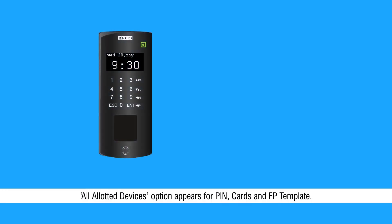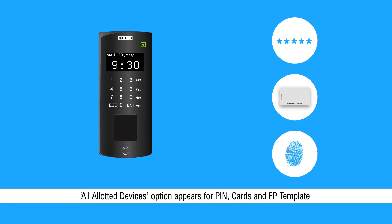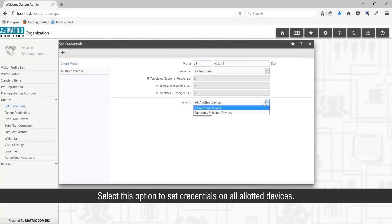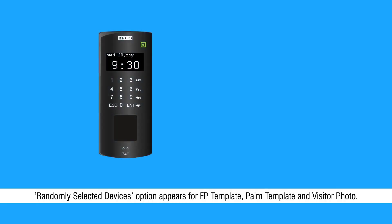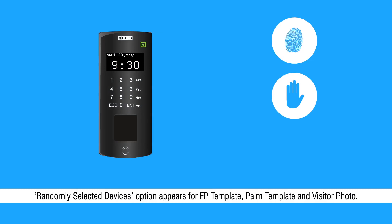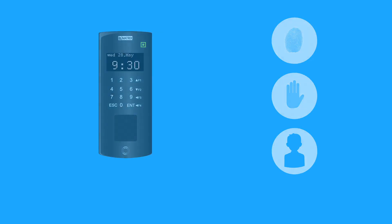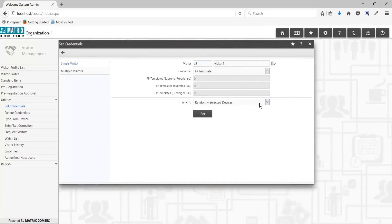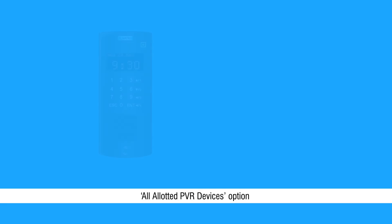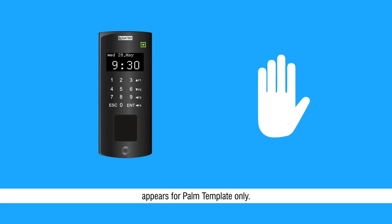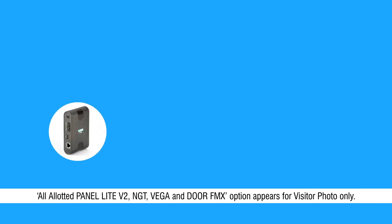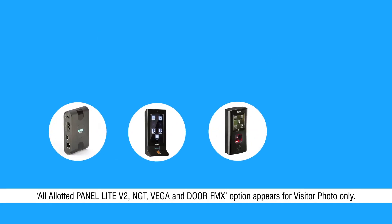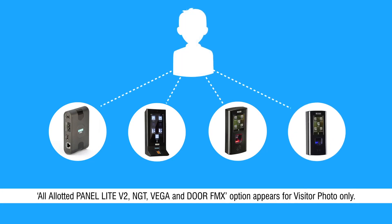The All Allotted Devices option appears for PIN, Cards, and Fingerprint Template. Select this option to set credentials on all allotted devices. The Randomly Selected Devices option appears for Fingerprint Template, Palm Template, and Visitor Photo — select this to set credentials on a specific device or devices. The All Allotted PVR Devices option appears for Palm Template only. The All Allotted Panel Light V2, NJT, Vega, and Door FMX option appears for visitor photo only.